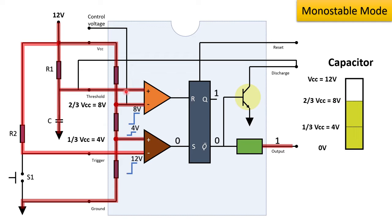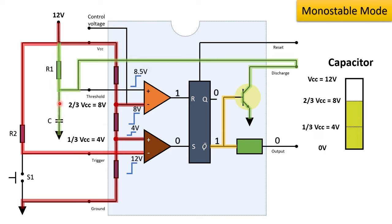Once the capacitor reaches 2/3 Vcc, the voltage at the positive terminal becomes greater than the negative terminal. This changes the output of the threshold comparator from 0 to 1. The flip-flop input is now 0 and 1, setting the flip-flop output to 0 and 1. This causes the IC555 output to go to 0, and Q-bar at 1 activates the discharging transistor. The capacitor starts discharging again. Once capacitor voltage reduces below 2/3 Vcc, the comparator output goes to 0, and with both flip-flop inputs at 0, it stays in the same state. This is how we get one pulse at the output in monostable mode.